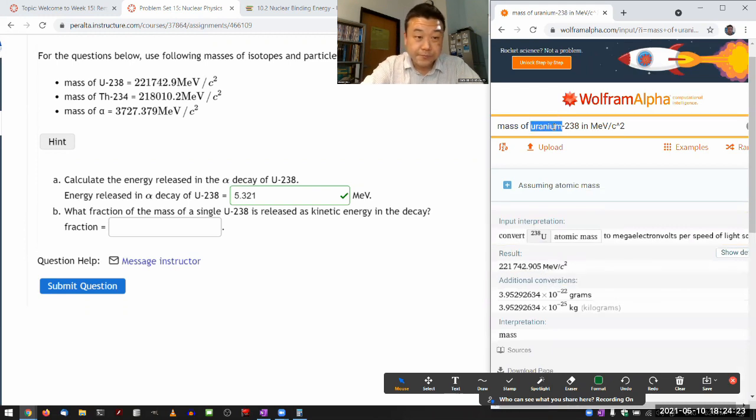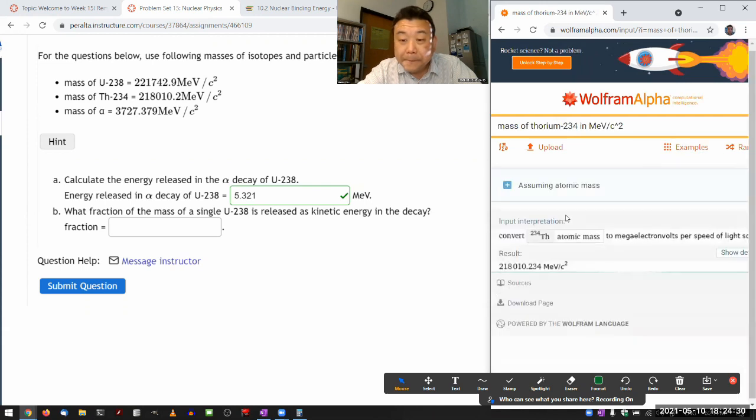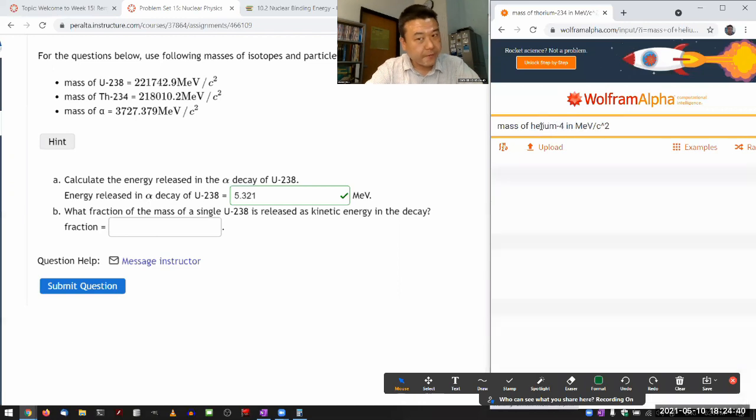Mass of thorium-234. Okay, those are the numbers. Let me just check one thing. Mass of helium-4, not alpha particle.